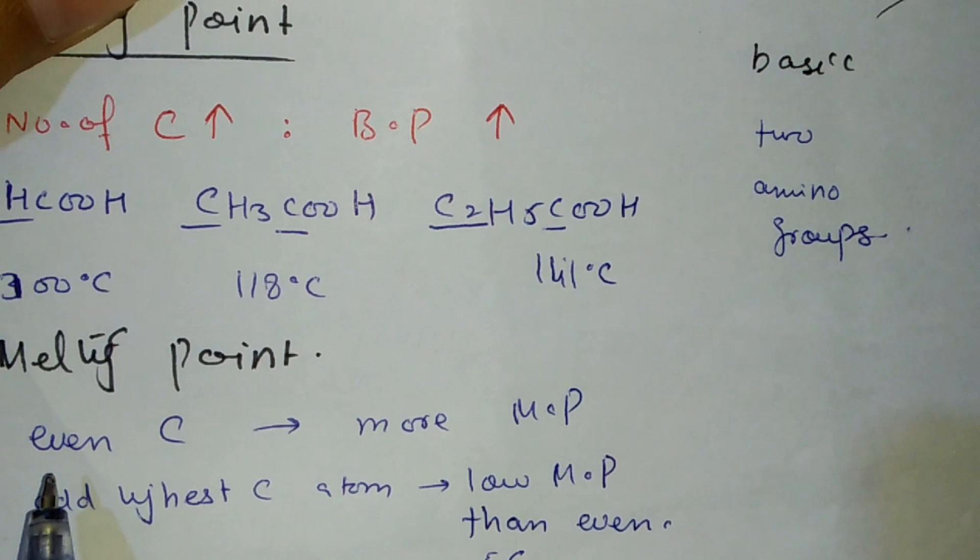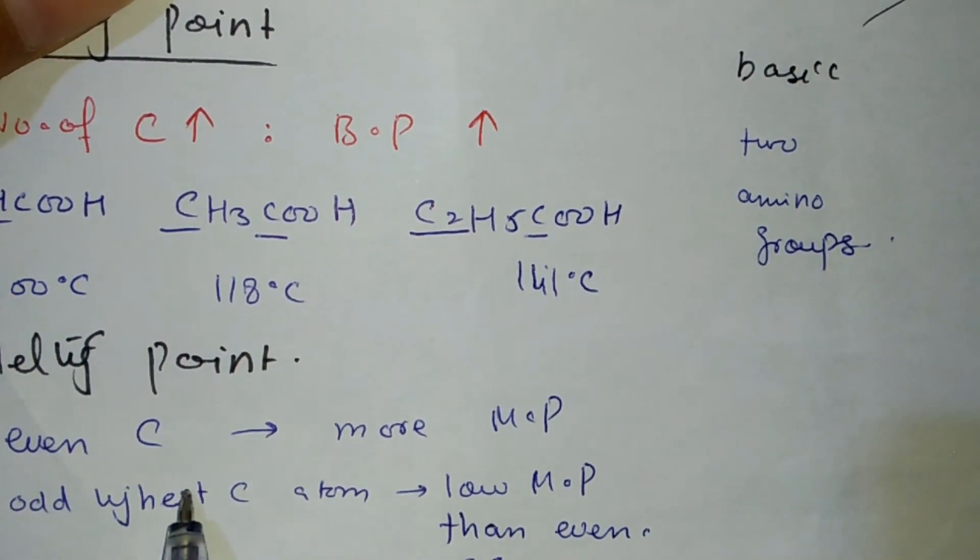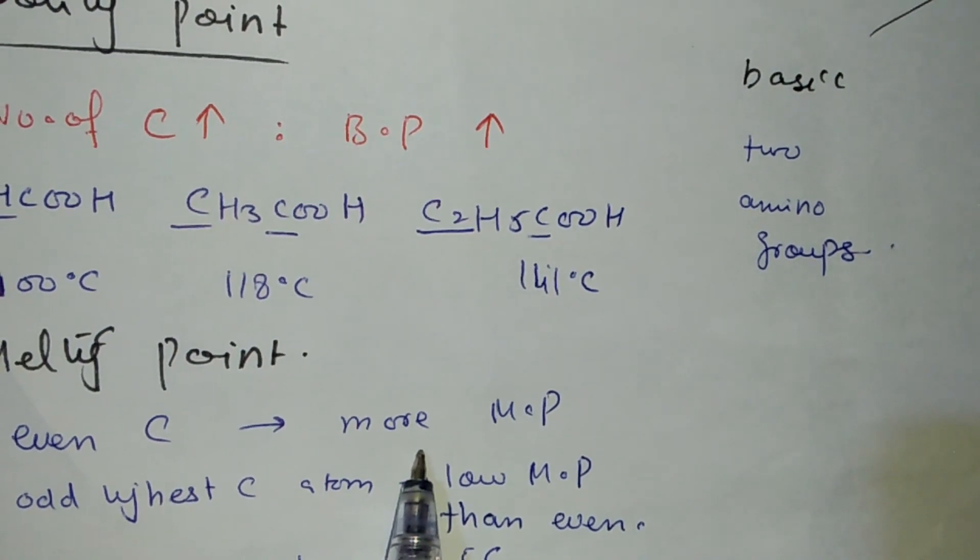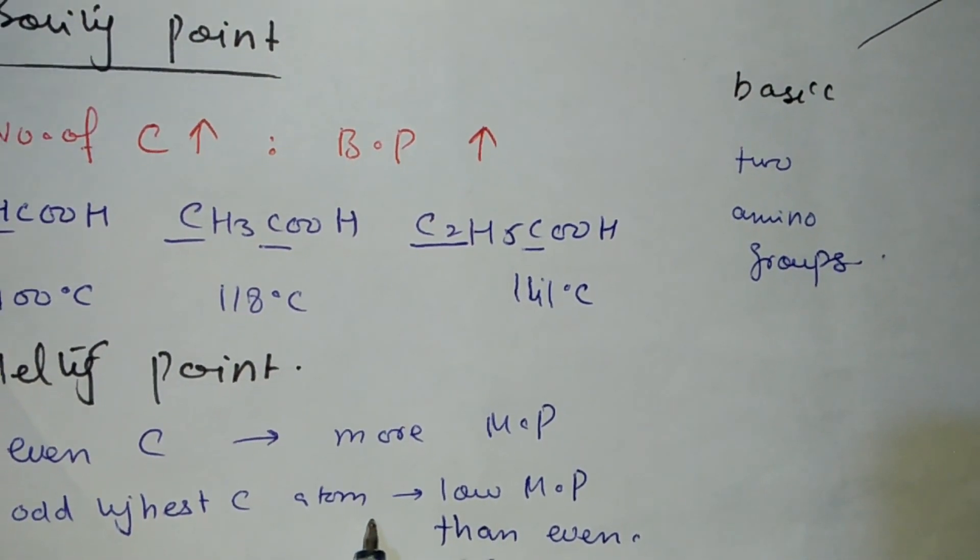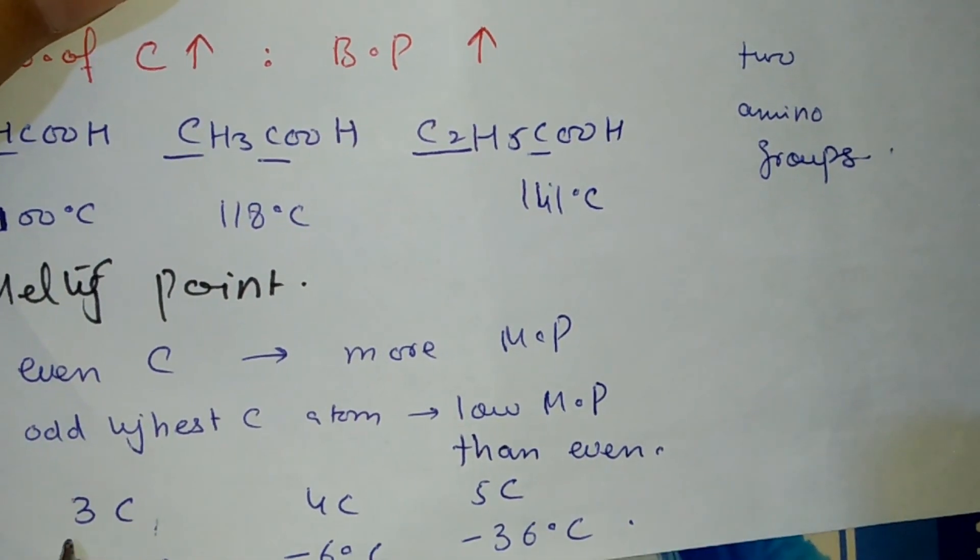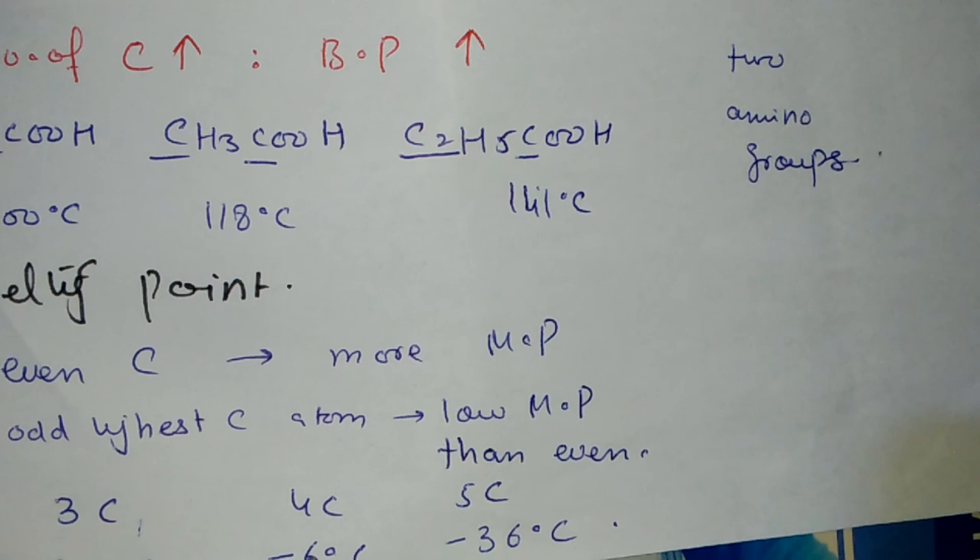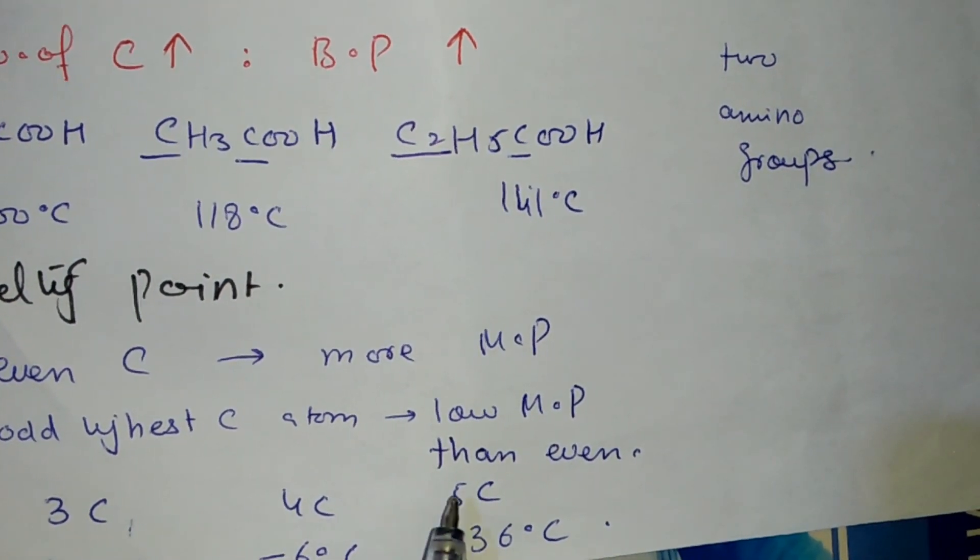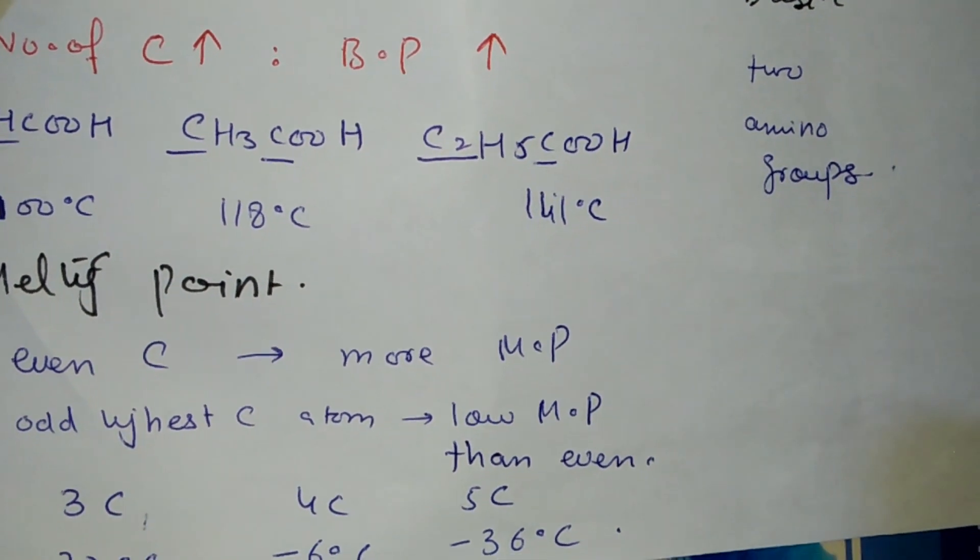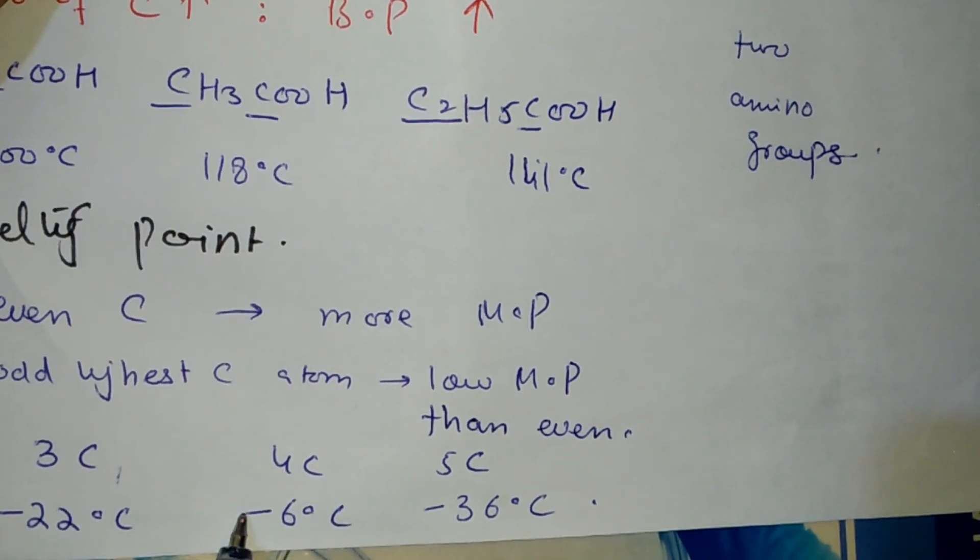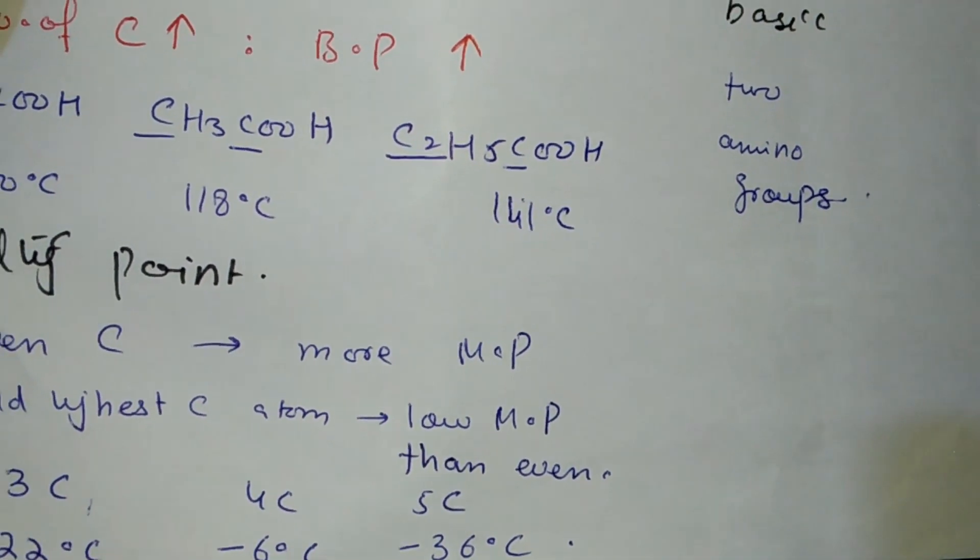For melting point, even carbon numbers have higher melting points compared to the next odd carbon number. For example, 4-carbon is minus 6 degrees Celsius, and the next element with 5 carbons is odd, so even carbon numbers have higher melting points. Minus 6 is greater than minus 36.